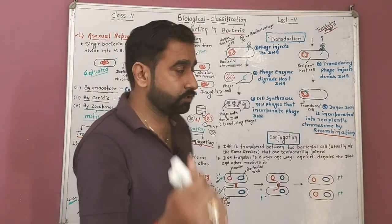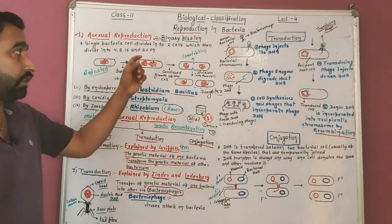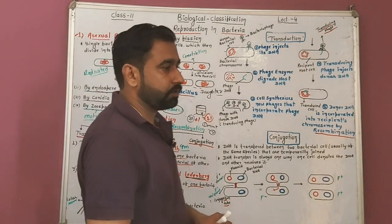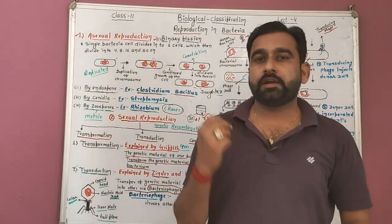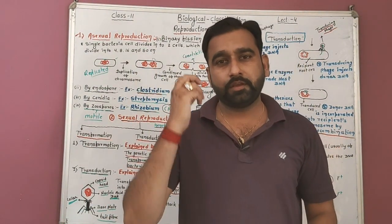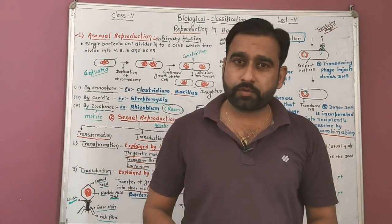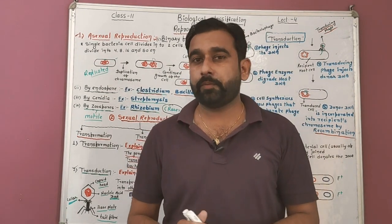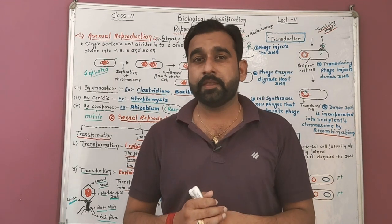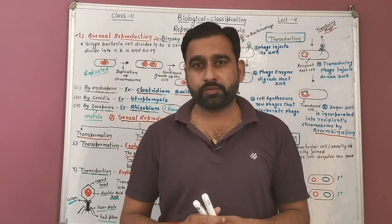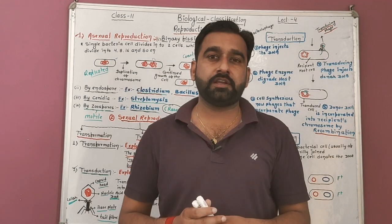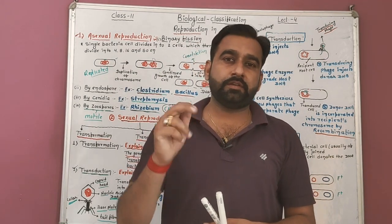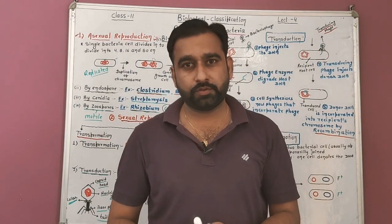So this is all about reproduction in bacteria — asexual reproduction as well as sexual reproduction. Sexual reproduction is of three types: transformation, transduction, and conjugation. In the next video we will discuss the economic importance of bacteria and the harmful effects of bacteria. Thank you students — subscribe to the channel, press the bell icon, and the last video lecture is given in the description box.